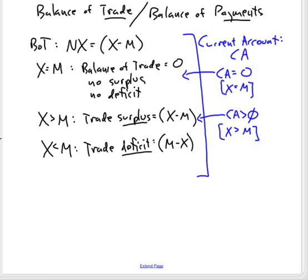If exports are greater than imports, the current account is positive — that's a surplus on current account. If imports are greater than exports, then the current account is negative.